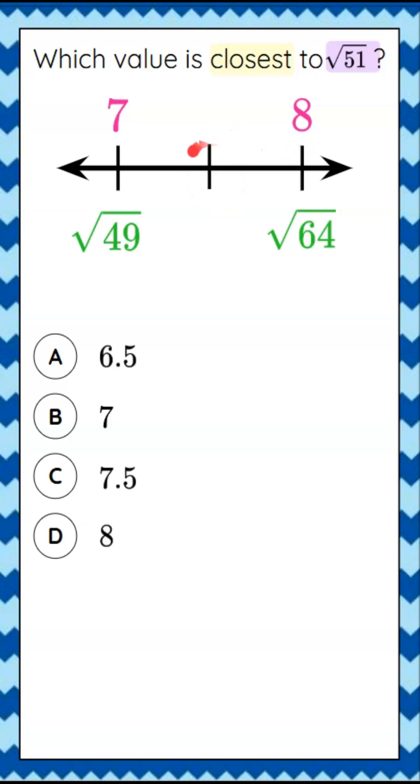If I want to consider what's halfway between, from 49 to 64, I'm going to increase by 15. So if I add 7.5 to 49, I get 57. So 7.5 is approximately the square root of 57 because that is not a perfect square that's in between here.